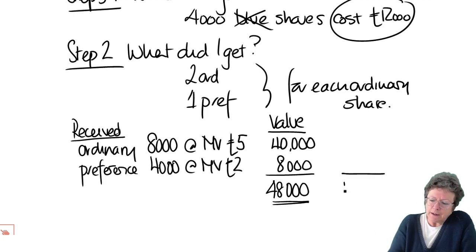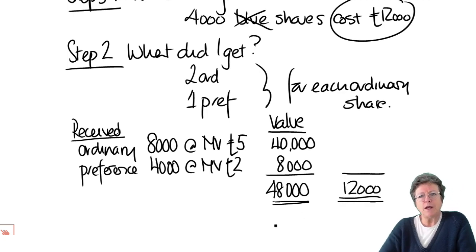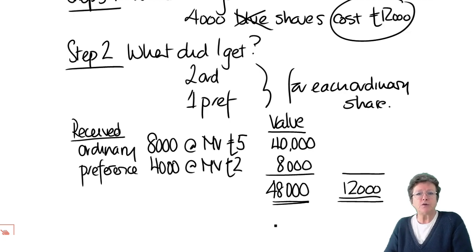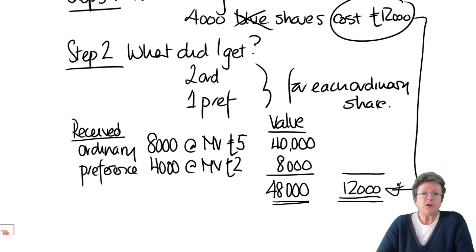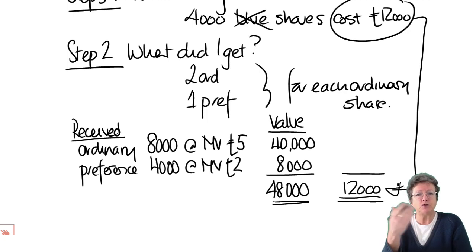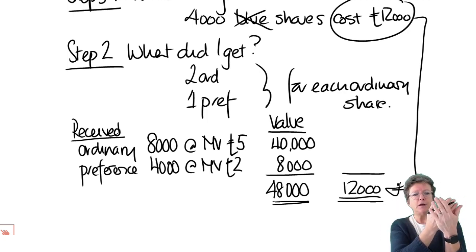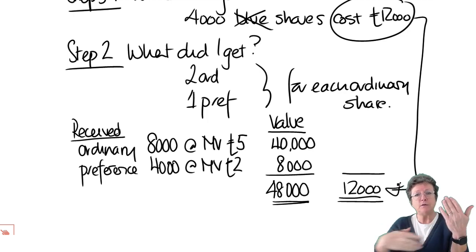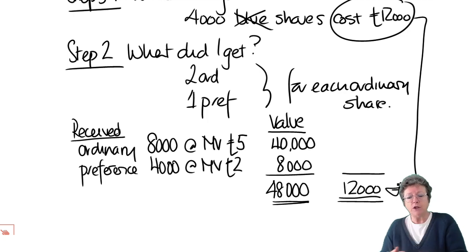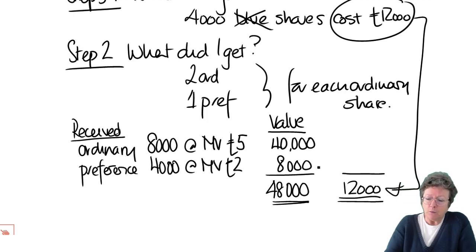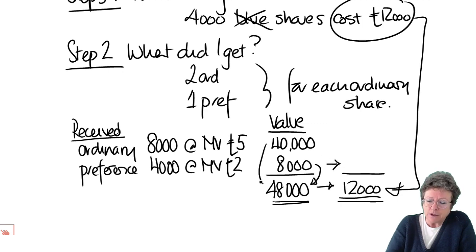We need to allocate the original cost of £12,000 between those two share types because Mark sold some of them and we need the cost for our computation. The original cost never alters — that's how much he paid for his original shares. We divide the cost between the two using market value. So it would be 40,000 divided by 48,000 times 12,000 for the ordinary shares, and 8,000 divided by 48,000 times 12,000 for the preference shares.